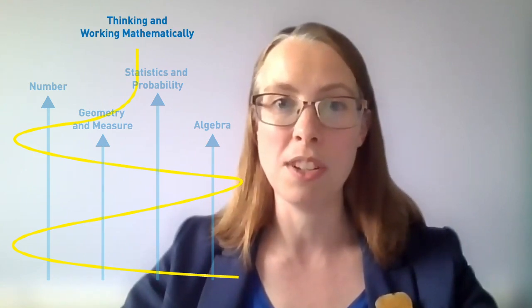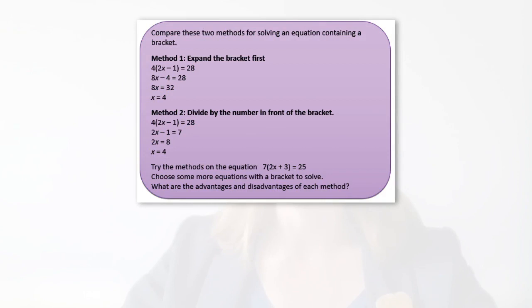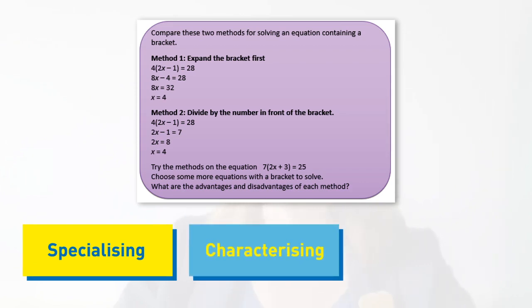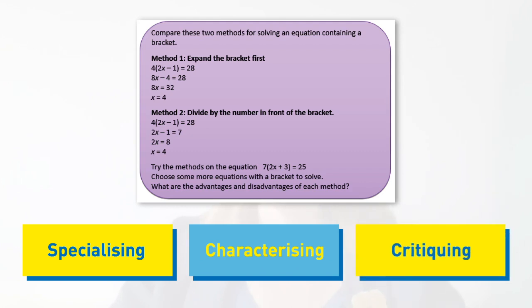Cambridge want to see thinking and working mathematically embedded into courses across all the strands. Activities and questions may provide opportunities to develop one or more characteristics. In this example activity, learners compare two methods for solving an equation, using the characteristics of specialising — creating their own equations of the same type — characterising — whether the equation can be simplified by dividing through a common factor — and critiquing, debating the advantages and disadvantages of each method. Cambridge will assess thinking and working mathematically in their yearly progression tests and at the end of stage nine checkpoint test. Our course makes incorporating thinking and working mathematically into your teaching and students' learning seamless, giving you the confidence that this new element is fully supported.